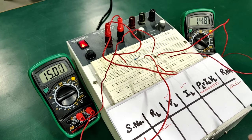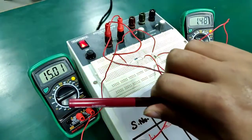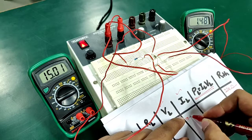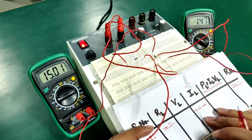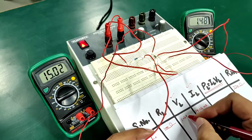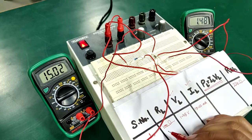So the value of current here is approximately 15 milliamperes and voltage is approximately 1.48 volts for case number one wherein RL is equal to 100 ohms.